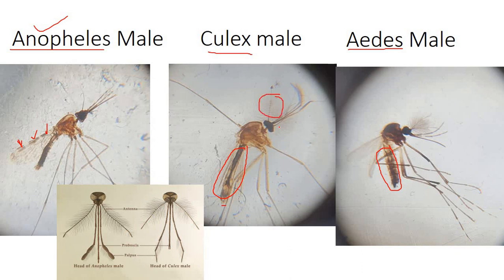To identify a male mosquito, look for the bushy antenna. Understanding head structure: there is a central proboscis through which it sucks blood, with immediately lateral palpi, and further lateral antennae. When the antenna is bushy — corresponding to a moustache in males — it indicates a male. In females, the antenna is hairy but not bushy.